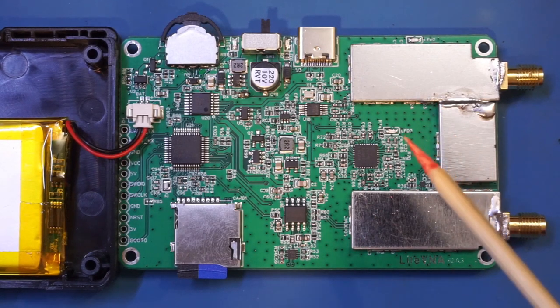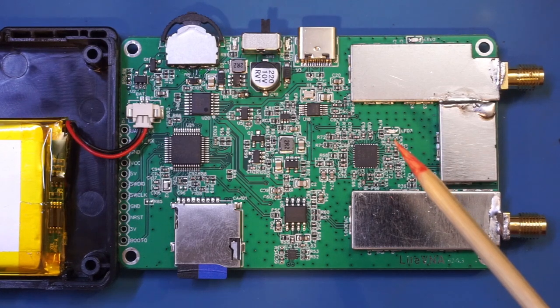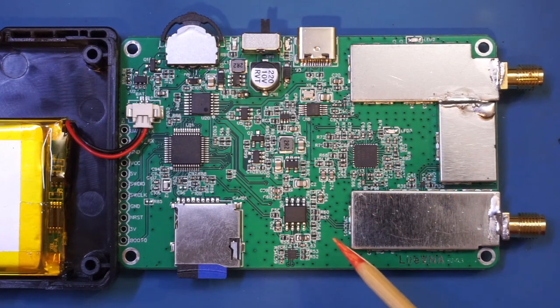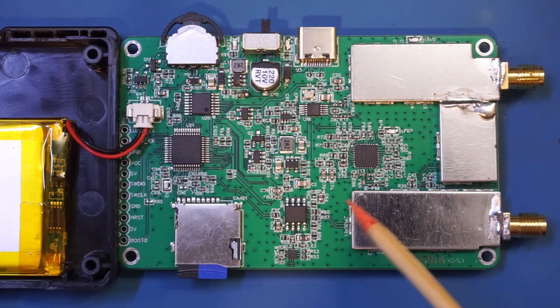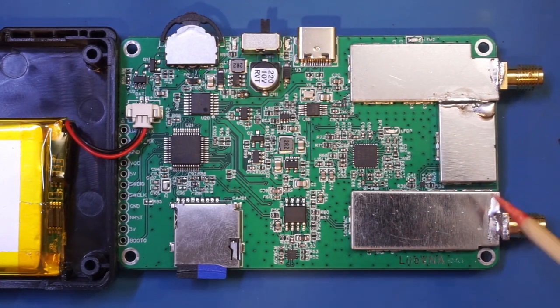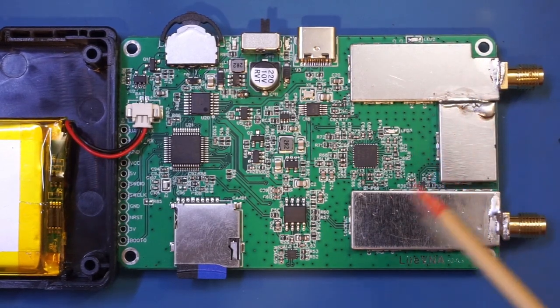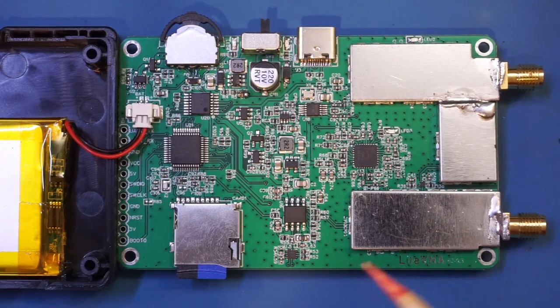If you watched my previous teardown of the Nano VNA-F V2, you will probably remember that we have seen a bunch of these ADG641s there. I think this is not the only one in this Light VNA either, but unfortunately these shielding cans are soldered on and it would be very difficult to remove, so I'm not going to do this in this video.